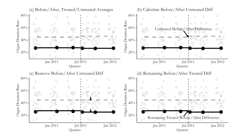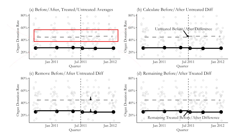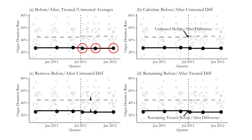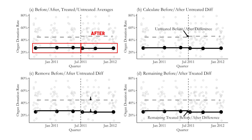We can look at a graph showing four lines — a dashed line before and after the July 2011 cutoff, and a solid line before and after. These are our four means. The solid line is the average of three quarters of California organ donation data before treatment, and three quarters after. The treated group average before and after appear on the left and right sides of the graph respectively.